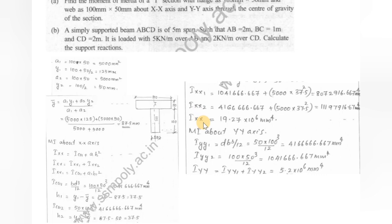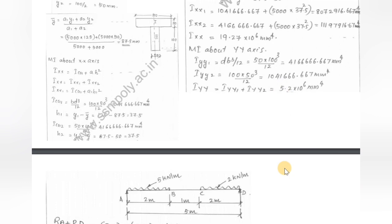The total IYY is found by summing the IYY contributions from both rectangles using the BD³/12 formula, as both are symmetric about the Y-axis and no parallel axis term is needed. This completes the moment of inertia calculations for the T-section about both the X-X and Y-Y centroidal axes.